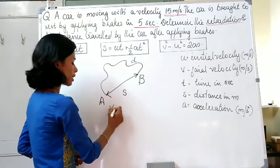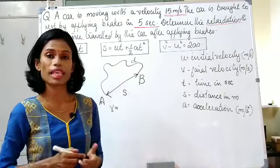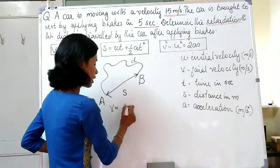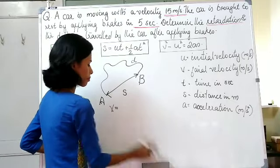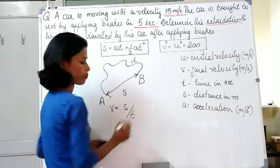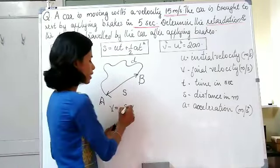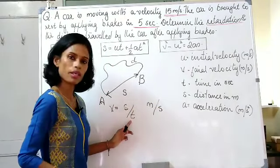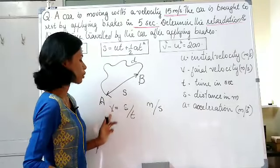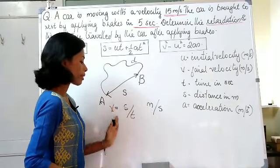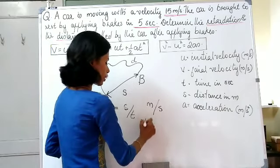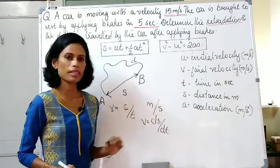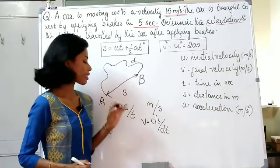Velocity is the rate of change of displacement, that is S divided by T. S is the displacement with unit meters, and T is time with unit seconds. So the unit of velocity is meter per second. Mathematically, we can represent it as V = dS/dt.